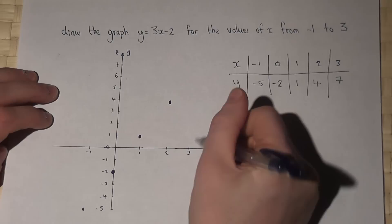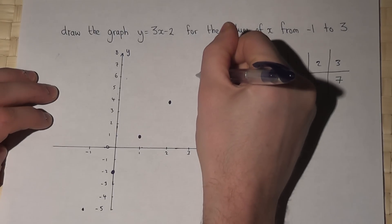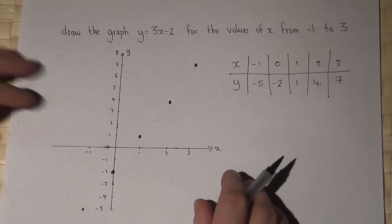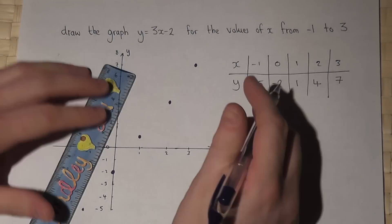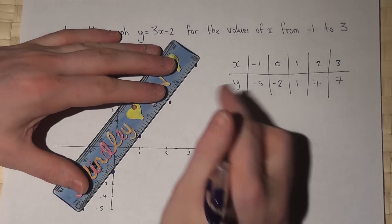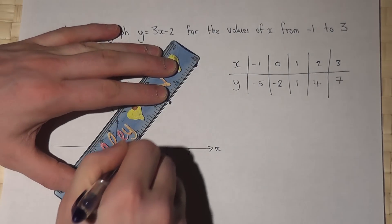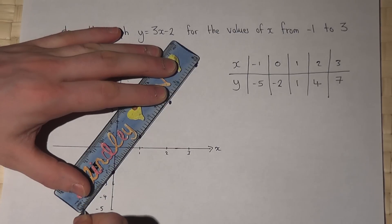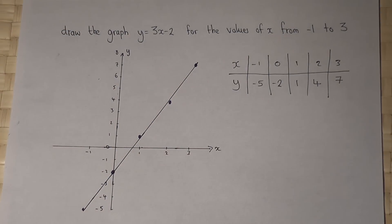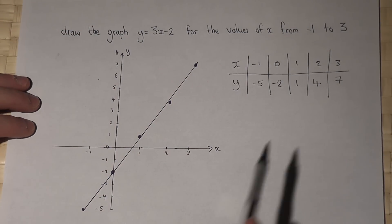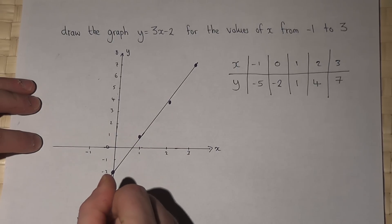And when x is 3, y is 7. And then get my ruler and draw a line through all those points. And there we go. There's the line y equals 3x minus 2.